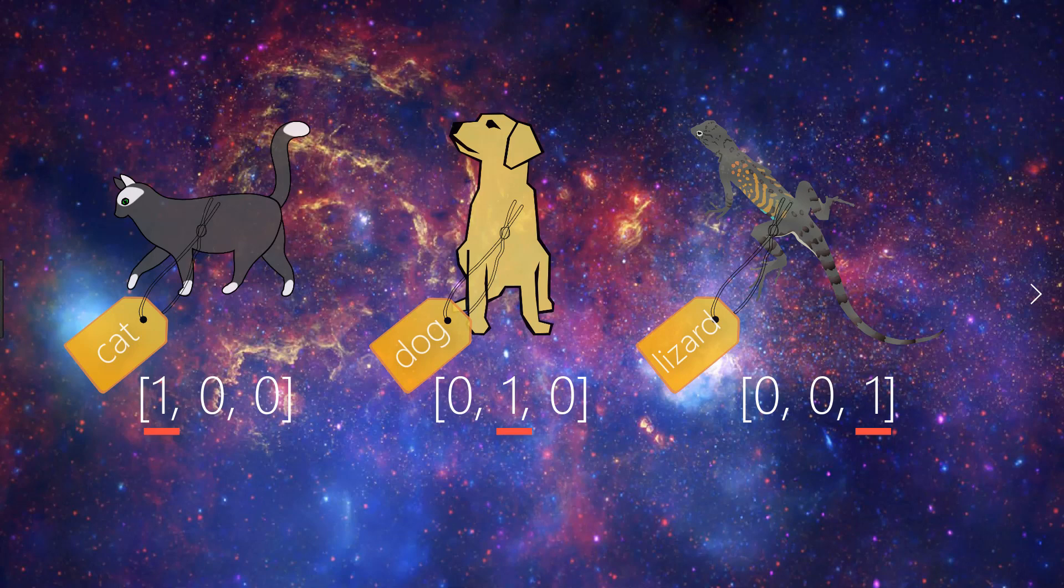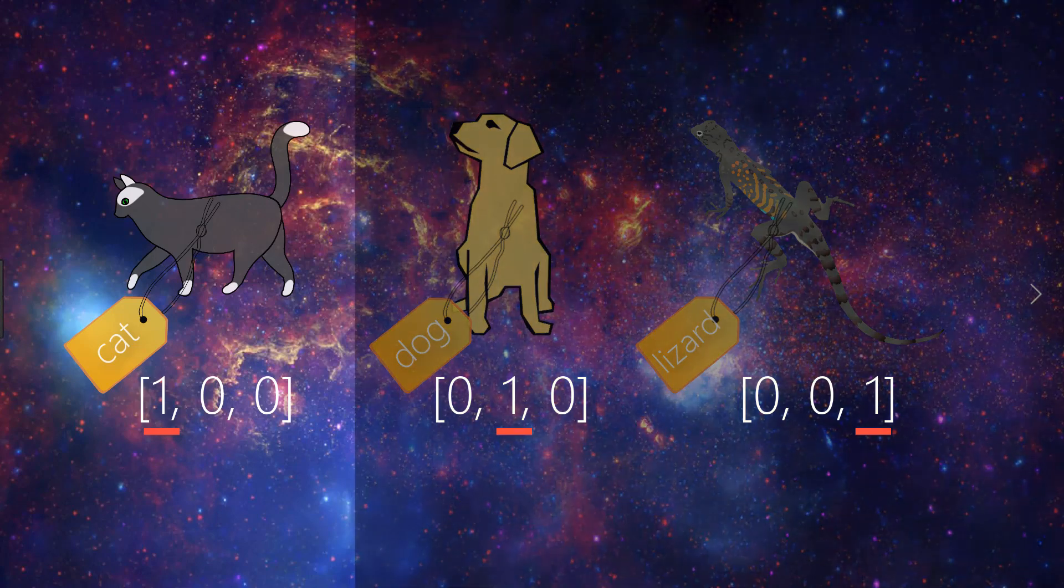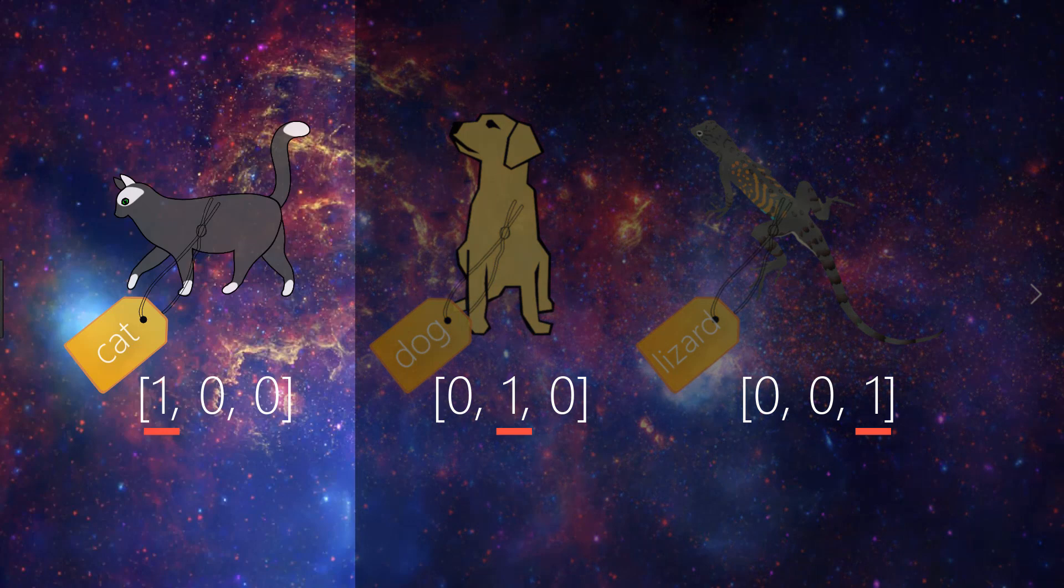So sticking with our same example, recall we said that a cat corresponds to the first element, dog to the second, and lizard to the third. For cat, we see that the first element is a 1 and the next two elements are 0s. This is because each element within the vector is a 0 except for the element that corresponds to the actual category, and we said that the cat category corresponded to the first element, so that's the reason for the 1 here.